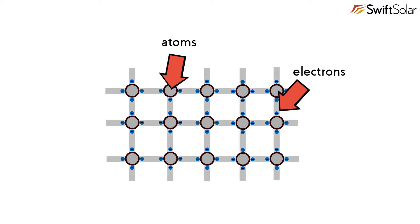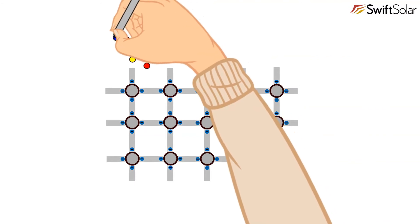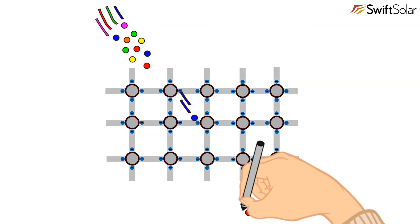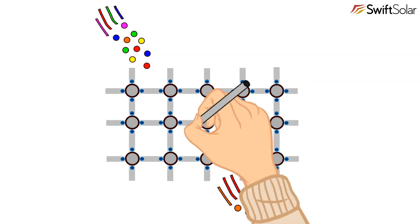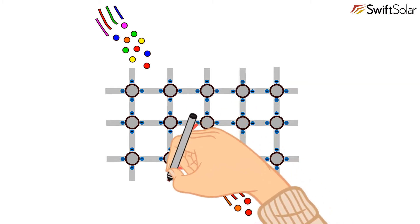Semiconductors absorb certain colors of light depending on the exact material. So when our stream of photons shines on the solar cell, some are absorbed and some pass through. When a photon is absorbed, it will dislodge an electron from the semiconductor lattice. This electron is now free and has enough energy to move around.